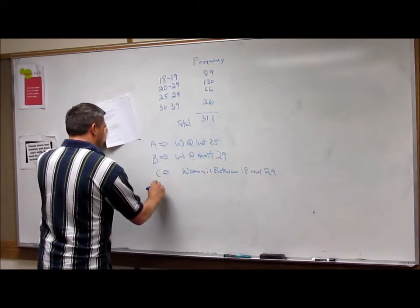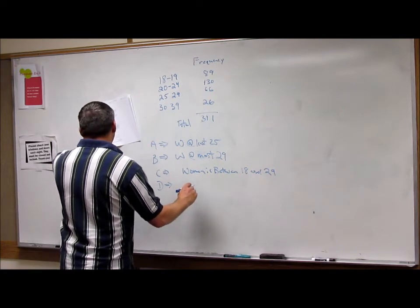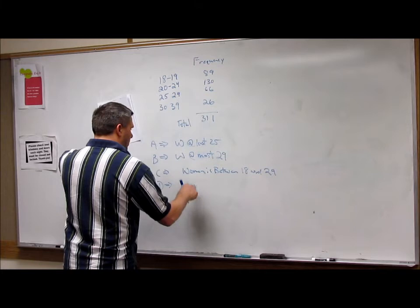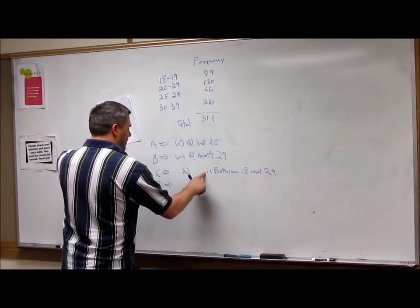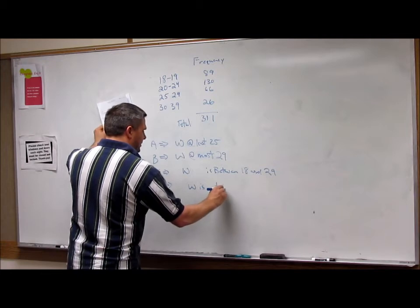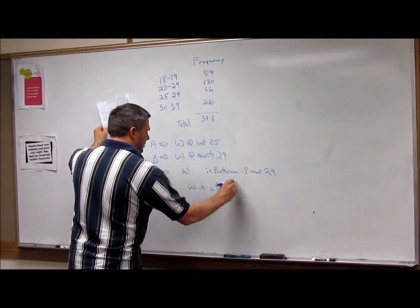And D implies that the woman W is at least 20.